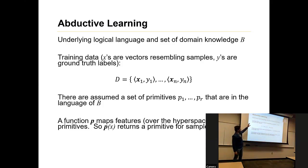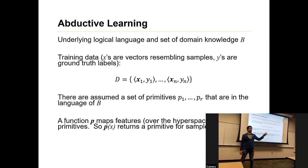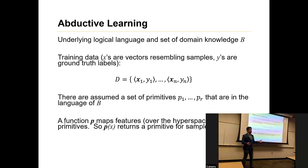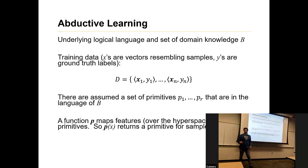You have the training data. The Xs are vectors, and the Ys are ground truth labels — the final ground truth we're trying to determine. There is also an assumed set of primitives that are in the language of B, and we don't have any information on those. We can think of this as having a bunch of handwritten math problems where we know if they're right or wrong, but the primitives — what the digits and operators actually are — have no labels on that.